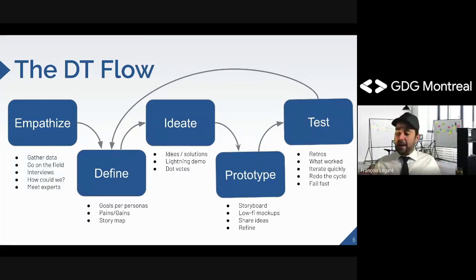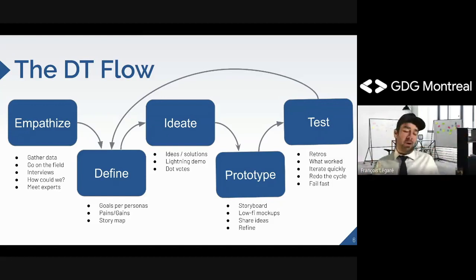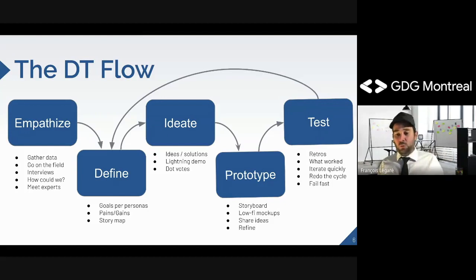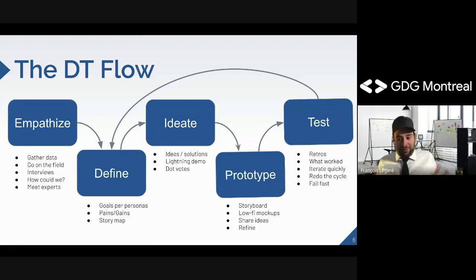This is the overall design thinking flow. First, we empathize — we gather information in the field, speak to the user, investigate what they like, what's the pain, and gather as much data as possible. It could also be market data, online reports — any type of data to define a solution later on. The important thing is to go on the field, see the end user, and speak in their environment. It's much easier to understand their point of view when you're living the situation with them.